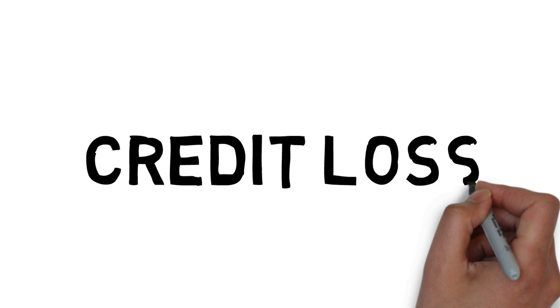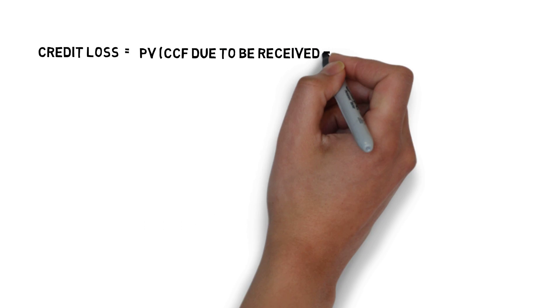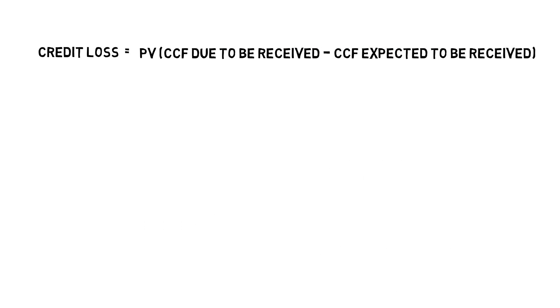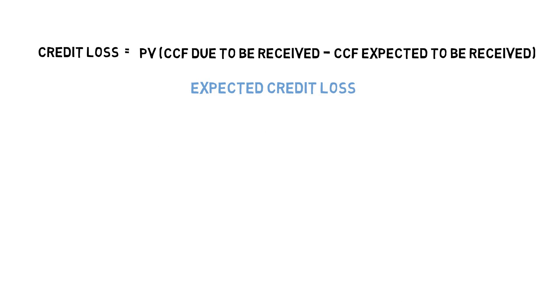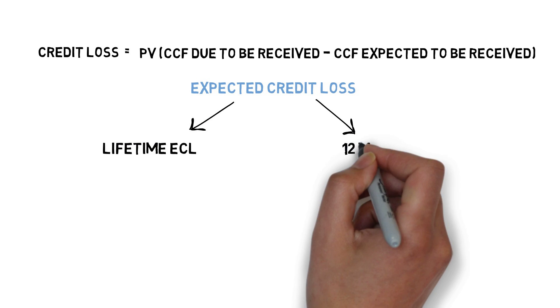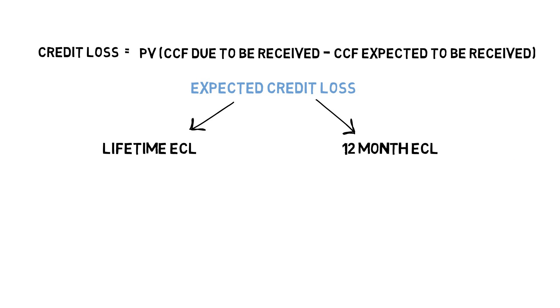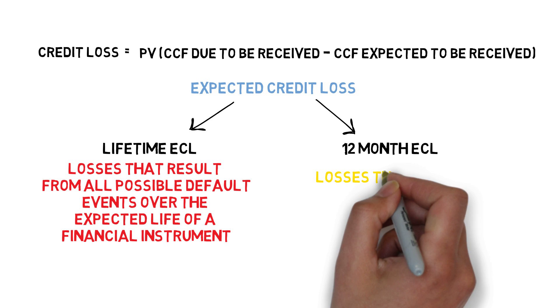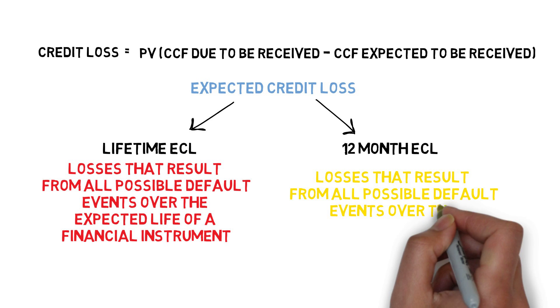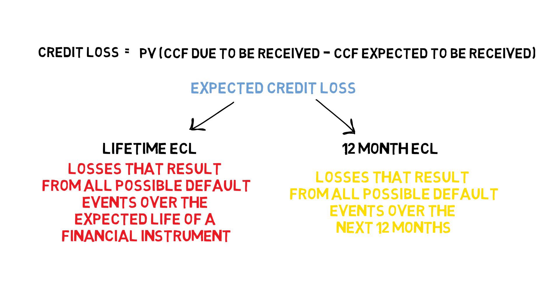Let us now understand what credit loss is. Credit loss is the present value of the difference between the cash due to be received and the cash expected to be received — basically, credit losses are cash shortfalls. There are two types of expected credit loss: Lifetime ECL and 12-month ECL. Lifetime ECL are losses that result from all possible default events over the expected life of a financial instrument, whereas 12-month ECL are losses from all possible default events over the next 12 months of the reporting period.